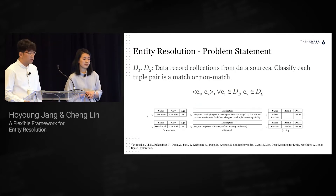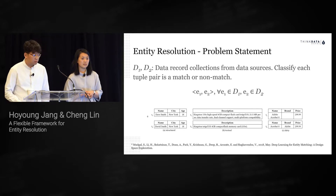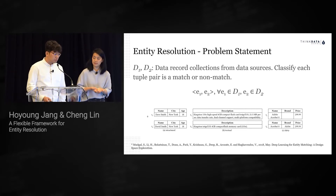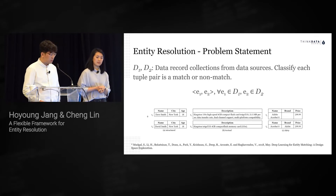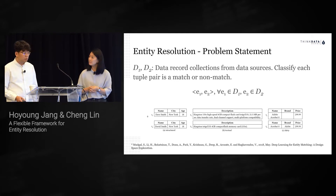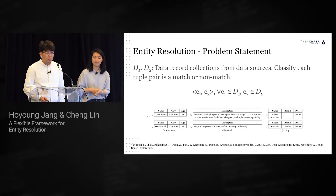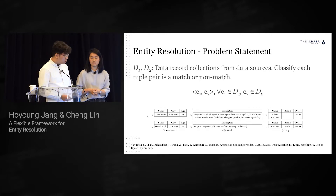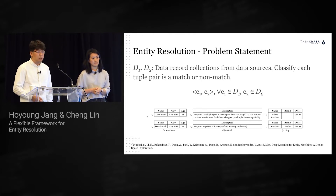Entity resolution is a classification problem. We want to classify each entity pair E1 and E2 in the Cartesian product of data sets D1 and D2 into a match or a non-match. When D1 equals D2, it becomes a deduplication problem. From the tables, you can see examples of structured data, textual data, and dirty data. Most entries in open data are still entered by humans, resulting in messy data with inconsistent spacing, typos, wrong columns, and use of abbreviations. Due to time complexity being O(N²), blocking mechanisms are used to reduce the search space, but blocking requires clean and structured data, which is usually not the case for open data today.